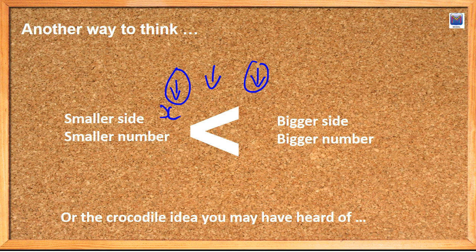So if we say this is an x and this is a 10, x is on the smaller side, so x must be smaller than 10. You may in previous years have heard of the idea of a crocodile or something eating whatever's the biggest. And this is like a set of jaws. Here's his teeth. And he's eating the bigger number.